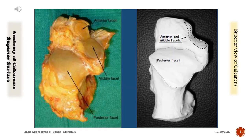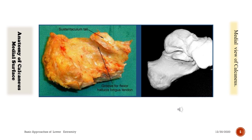Anatomy of the calcaneus — superior view. Notice the posterior facet, and the anterior and middle facets. Medial view: notice the sustentaculum tali and the groove for flexor hallucis longus.